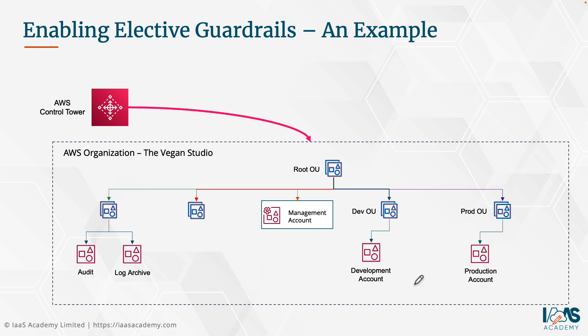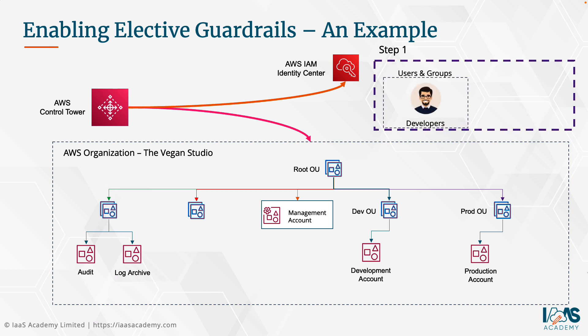So we're going to be doing two things in this lab. Step one is going to involve going into the IAM Identity Center — previously known as the Single Sign-On Service — and configuring a user called Bob and a group called Developers. Bob's going to be a developer in the Developers group. In addition to that, we're also going to create a permission set to allow Bob to perform various tasks within the Amazon S3 service. Once we've set this up, we're going to grant Bob the ability to work with the development account, and he will be able to access it using the AWS portal service.